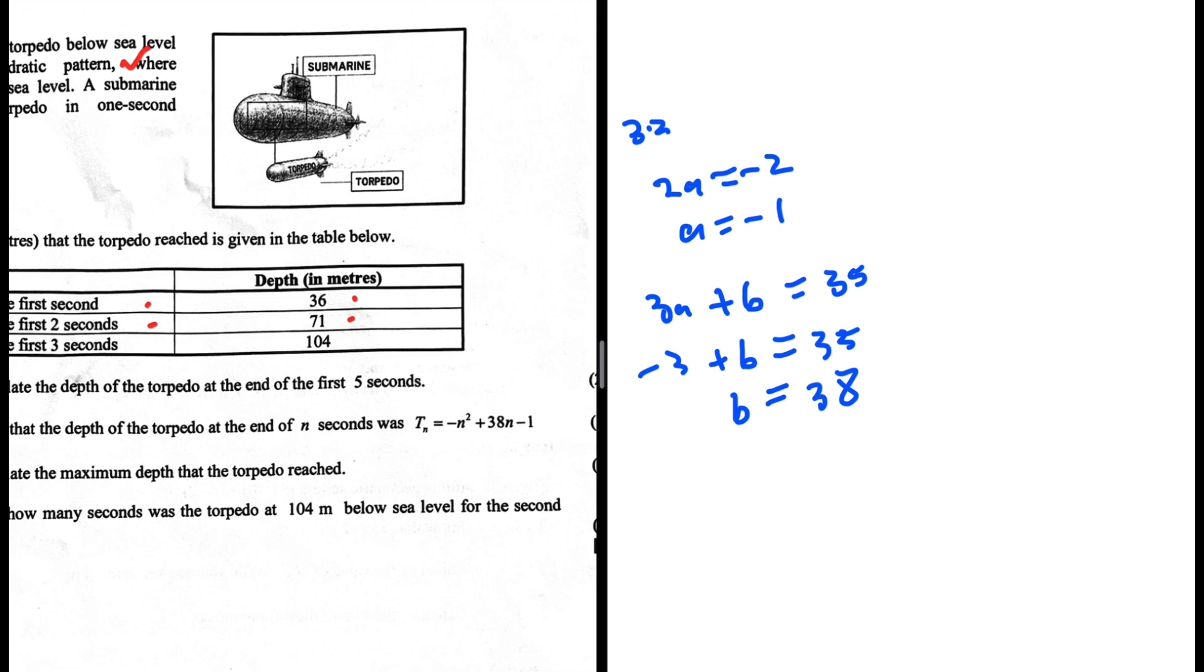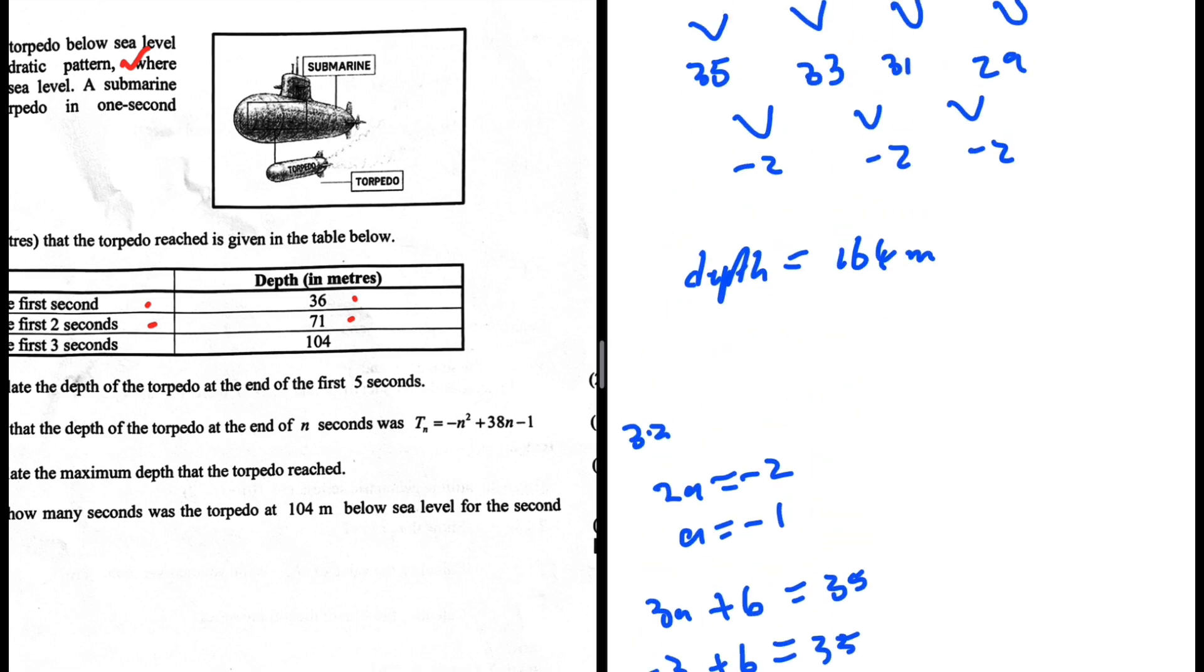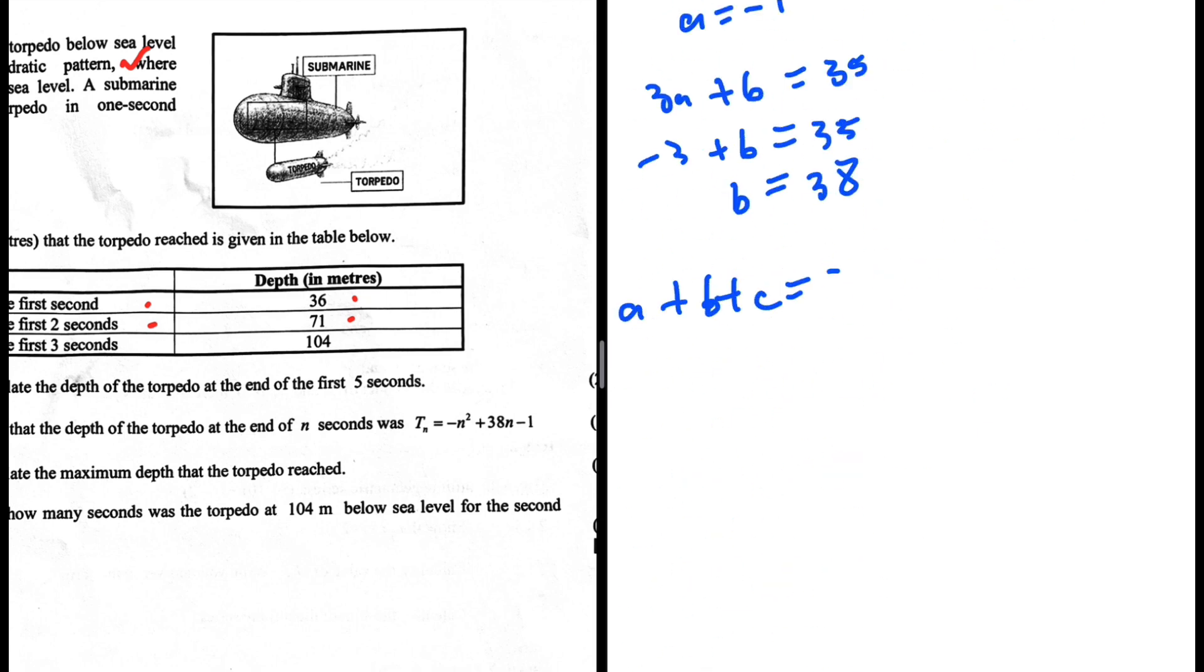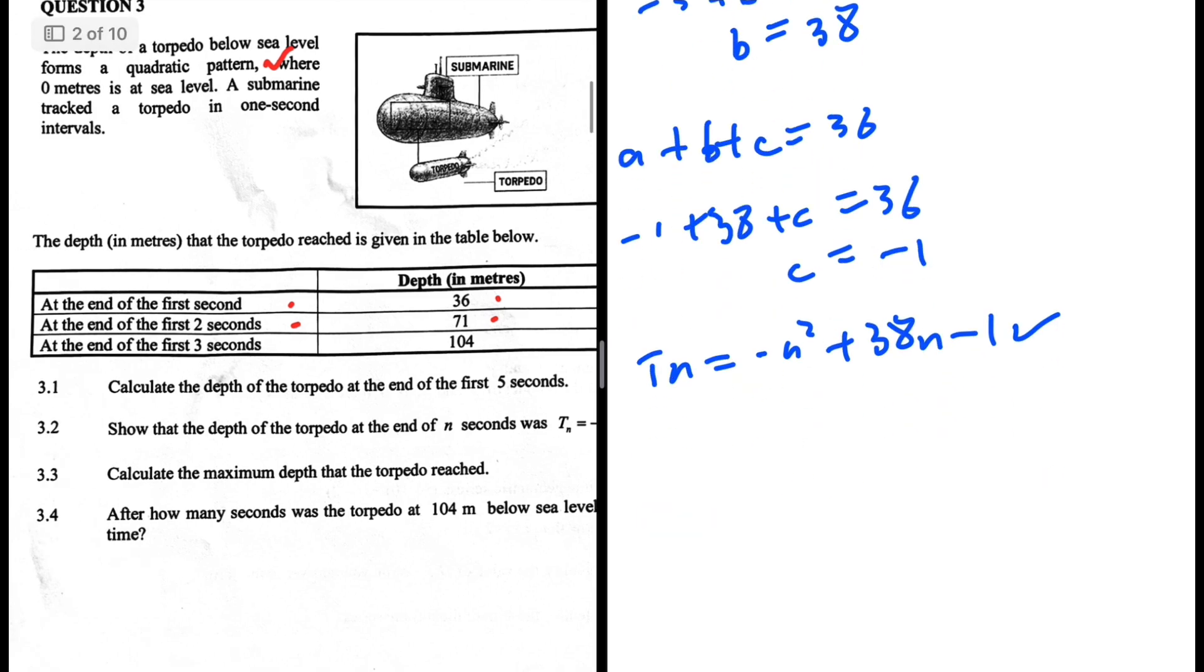And then a plus b plus c equals T1. What's the value of T1? 36. So minus 1 plus 38 plus c equals 36. c equals 36 plus 1 minus 38, which is minus 1. So Tn equals minus n squared plus 38n minus 1. That is 3.2.